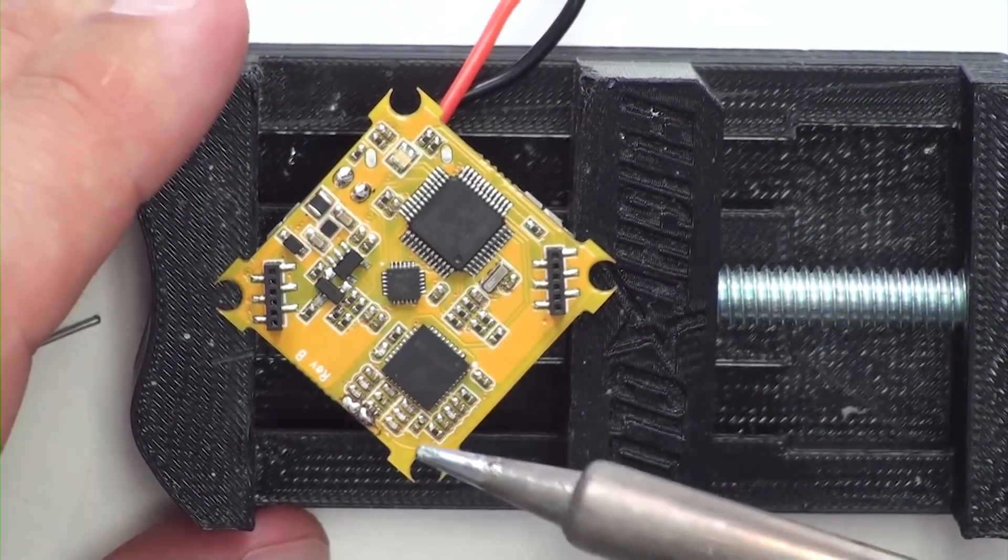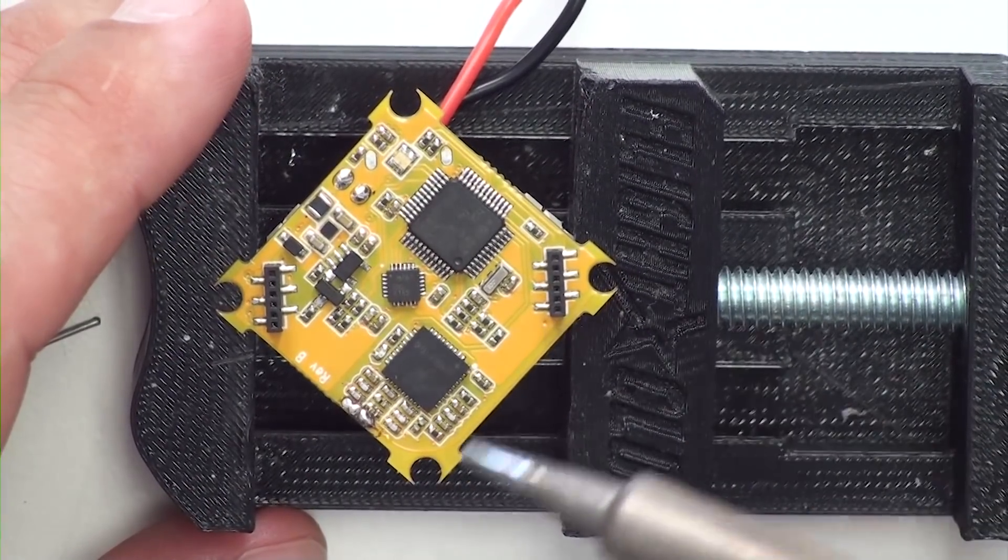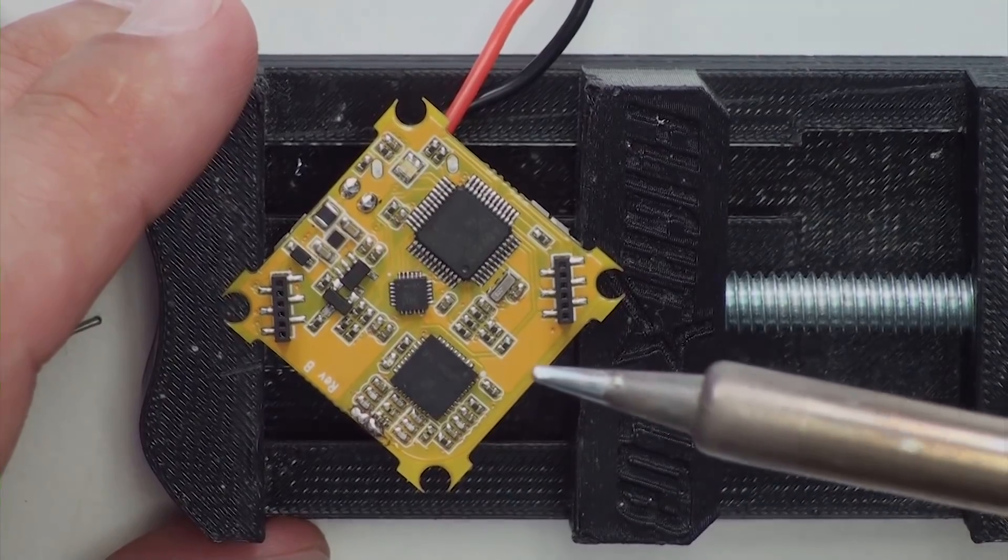That way if you lose an antenna, you can still fly using this internal antenna. If you guys have any questions or comments, leave them below and I'll see you on the next video.